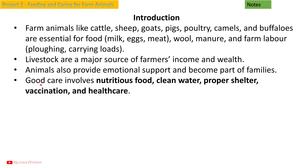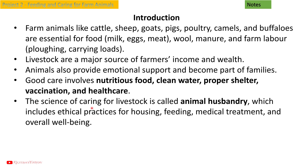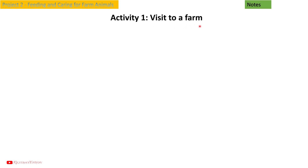Good care involves nutritious food, clean water, proper shelter, vaccination, and health care. The science of caring for livestock is called animal husbandry, which includes ethical practices for housing, feeding, medical treatment, and overall well-being.